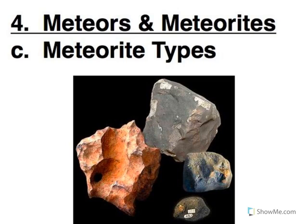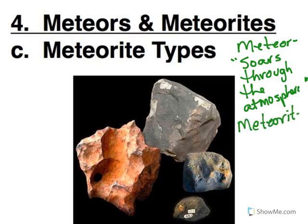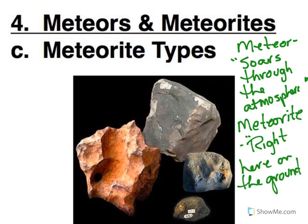If it does make its way down to the ground, then you have a meteorite. General rule of thumb: a meteor soars through the atmosphere, and a meteorite is right here on the ground. Obviously, to make it all the way down to the ground, the original pieces had to be fairly large. What ends up hitting the ground is going to be smaller than what started, because a lot of it is going to get burnt off. So you need to have something pretty good sized before you get an actual meteorite hitting the ground.